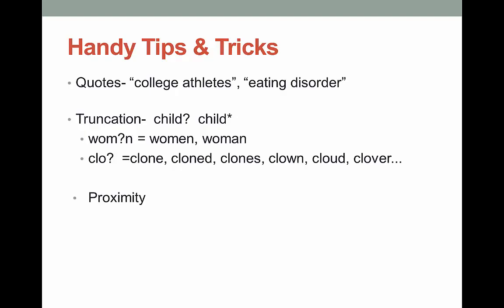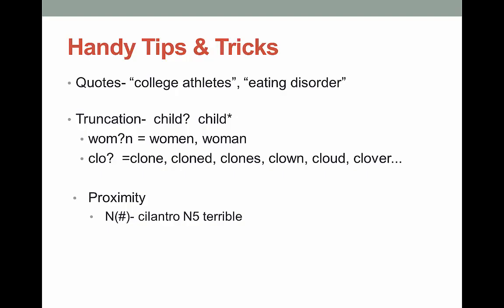Proximity helps you find words that are close together. Different databases have different ways to search this. EBSCO uses the N with a number — the number is how far apart the words can be. In this case, I'm asking the database to find instances where cilantro and terrible are within five words of each other, regardless of order. This could be "cilantro is the most terrible tasting herb ever" or "many can't stand the terrible taste of cilantro." Google also has a proximity search using the word AROUND in all capital letters with a number. Even I don't use proximity searching that much, but it is so handy when you do need it.